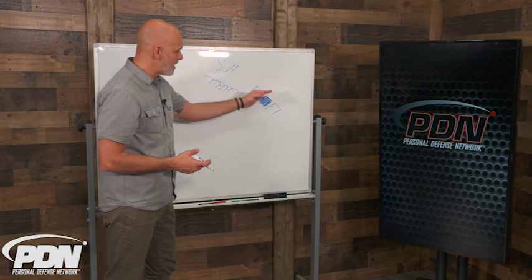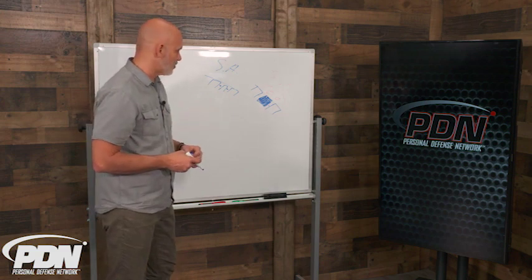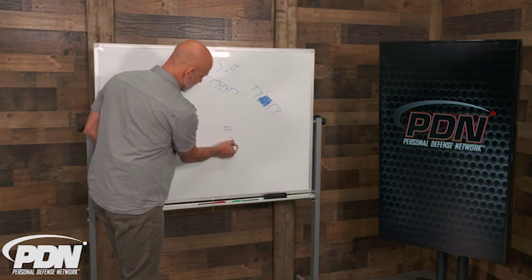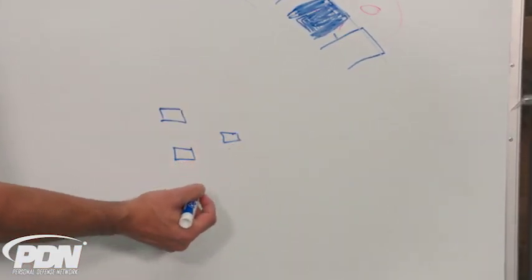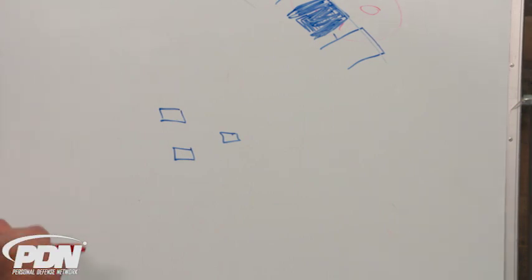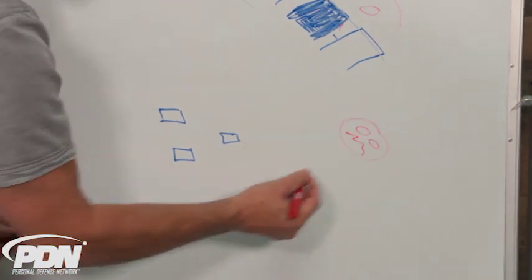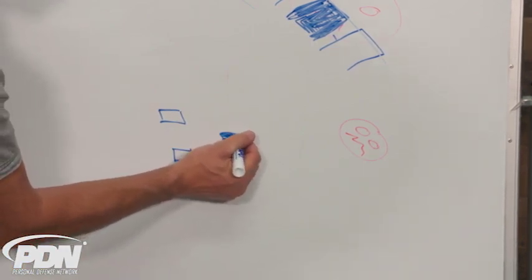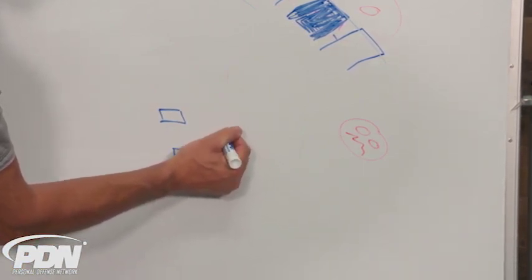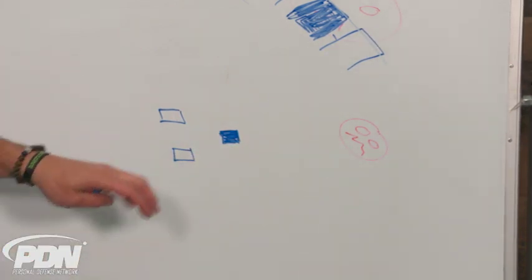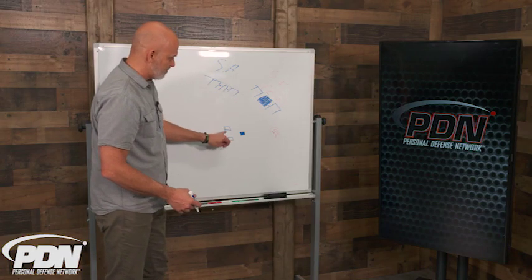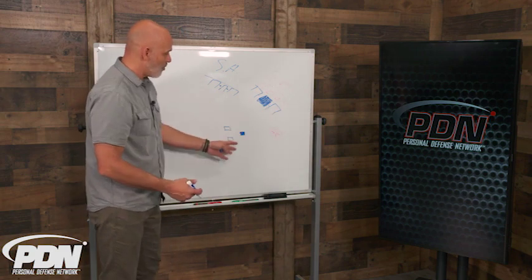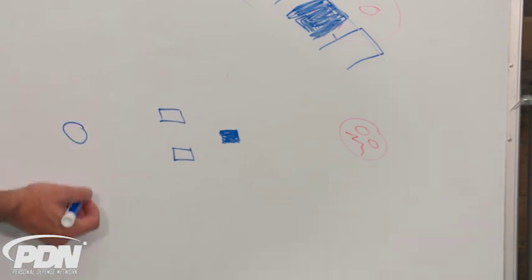When we're doing sighted fire, we maintain our sight picture throughout a smooth trigger press. In three dimensions: I've got my two rear sight posts, the front sight, and the target out there. My hard focus is on the front sight. In any artist's rendering or photography representing this, the rear sight is a little blurry and the target is definitely out of focus — because you can only focus at one distance at a time.